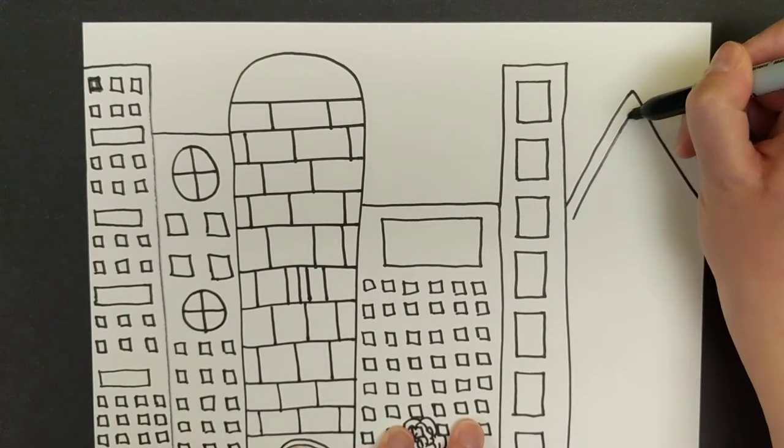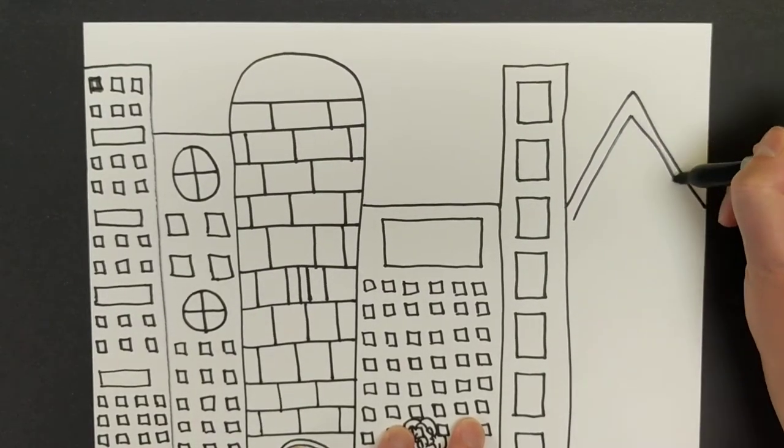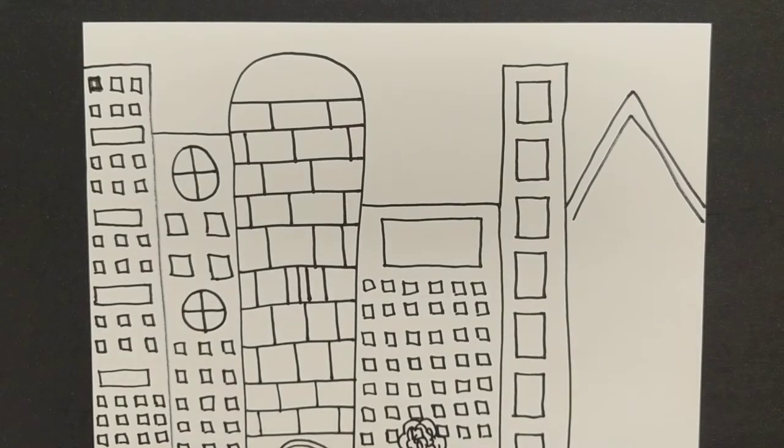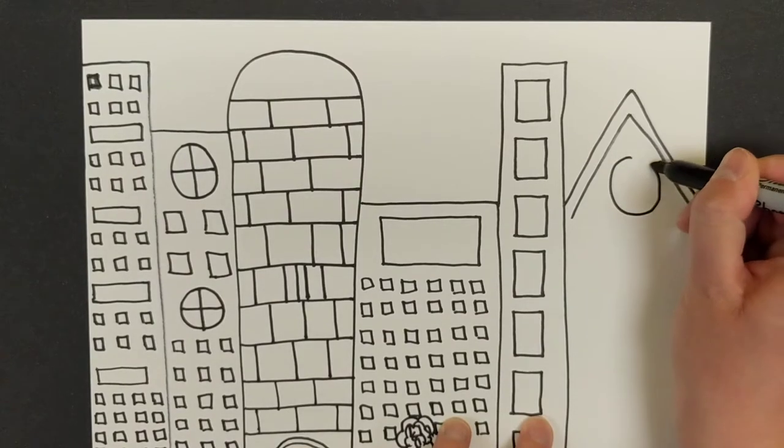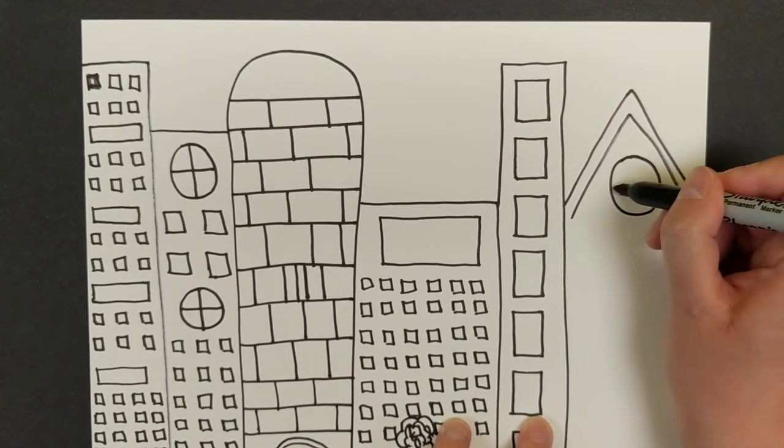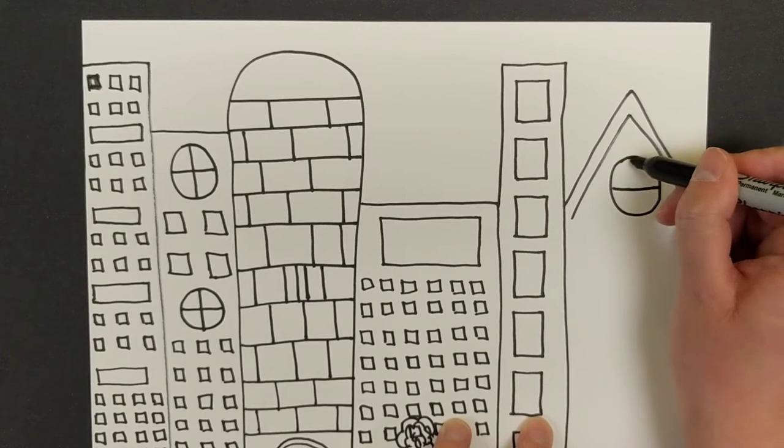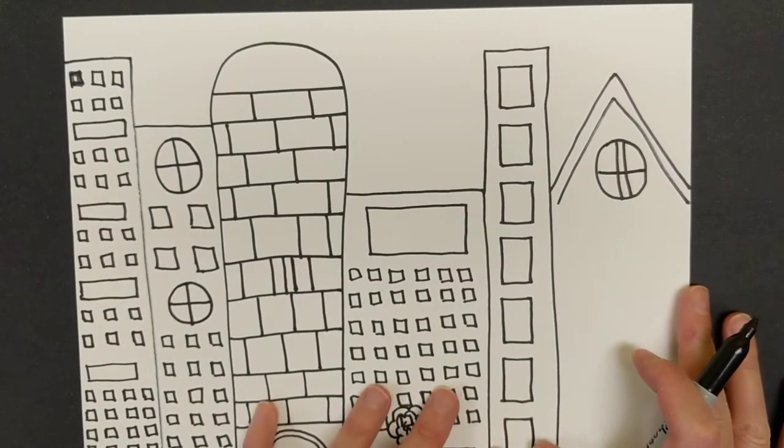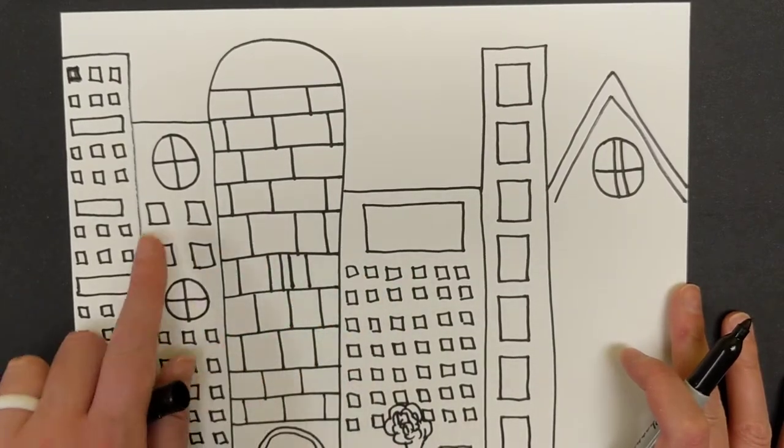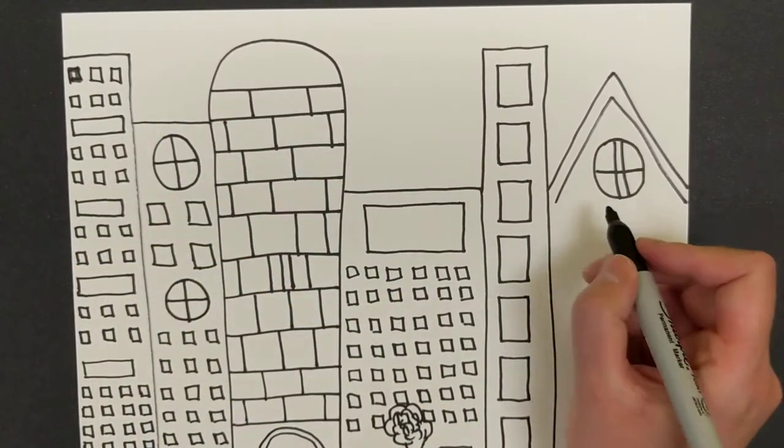And then let's see what else we can add in. How about we do a big circle at the top, and we're going to make this into a big window and maybe do a second line right there. And then again, you can see there's a lot of different types of windows in our art. So I think I'm actually going to do a big long rectangle window.